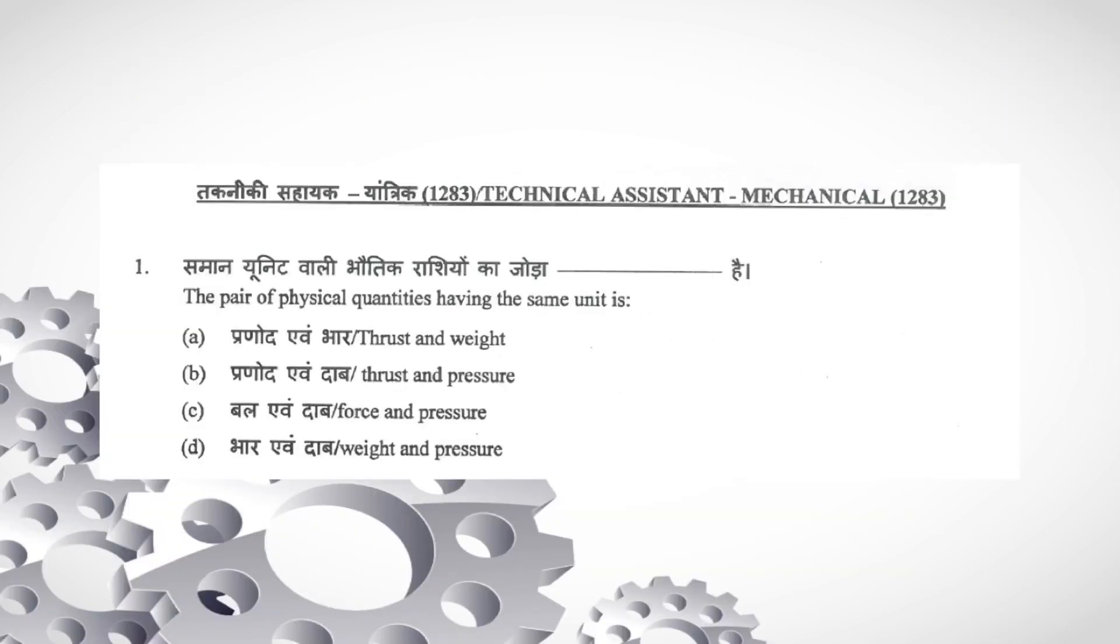The pair of physical quantities having the same unit: thrust and weight. Thrust unit is Newton and weight unit is also Newton. So A is your correct answer.